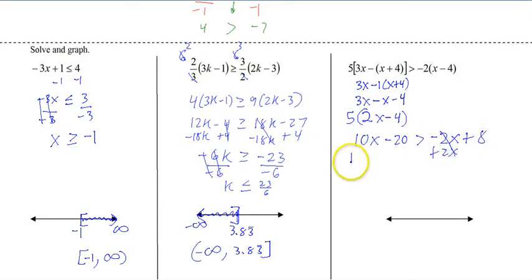Add the 2x. Add the 20 to put it on the other side. So that's 12x and 28. Now we divide by 12. And since we are dividing by a positive, that inequality will stay the same. Reduce it. So that's 7 thirds.